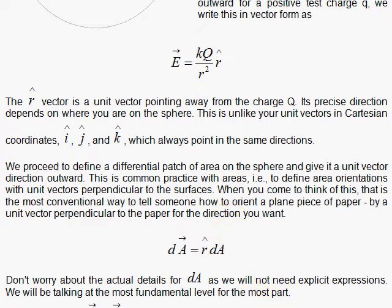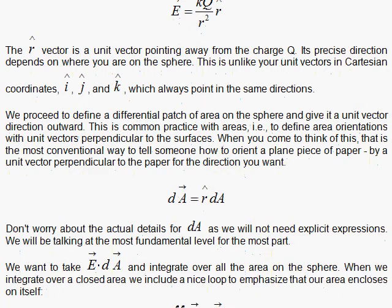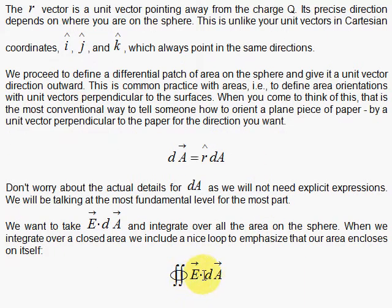So here we're going to integrate, we're going to integrate the electric field dot dA. And this means this dot product means I want the component of the electric field that is parallel to the little vector that defines the orientation of the area. Now, in this case, all the electric field force lines are radial. So we're going to have an easy case to work with here.